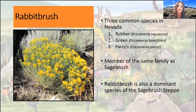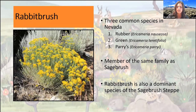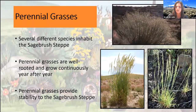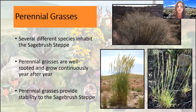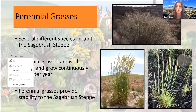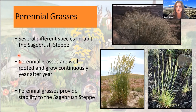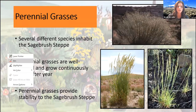Next we have perennial grasses, which are really important on the landscape in the sagebrush steppe. There are several different species that inhabit this steppe. Some common species you might find here in Nevada include Great Basin wild rye, Indian rice grass, Sandburg's bluegrass, and Idaho fescue.